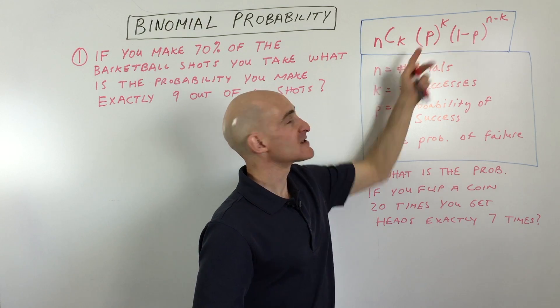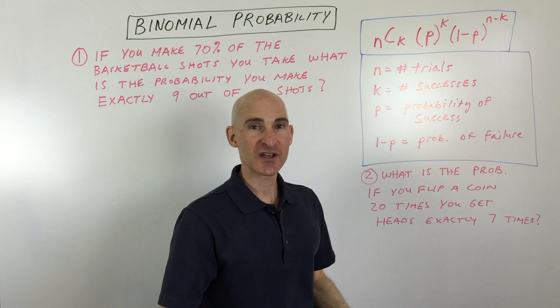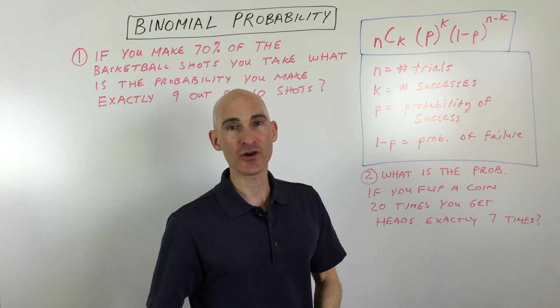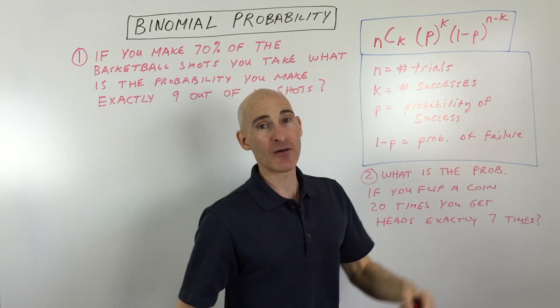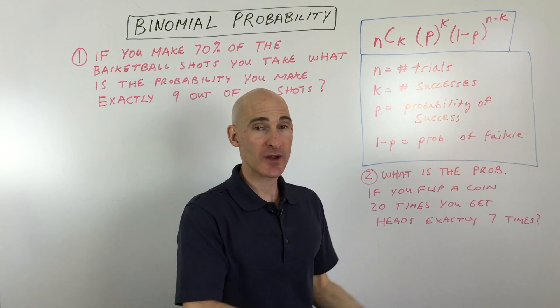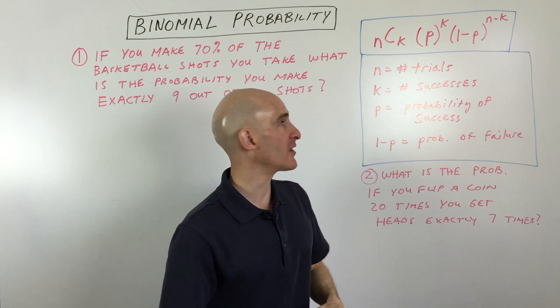And then p, what p represents is the probability of success as a decimal. So if it's a 20% chance of success, that's 0.20, and so on. And then 1 minus p is the probability of failure. So if there's a 20% success rate, that means there's an 80% failure rate, because they have to add up to one, to 100%.